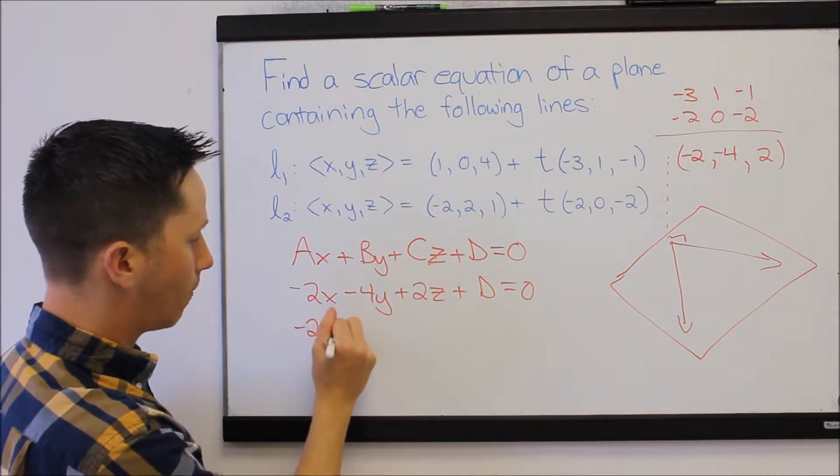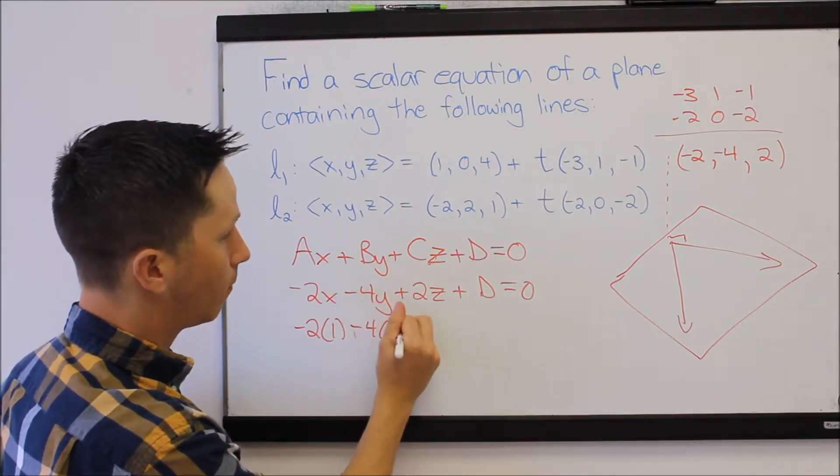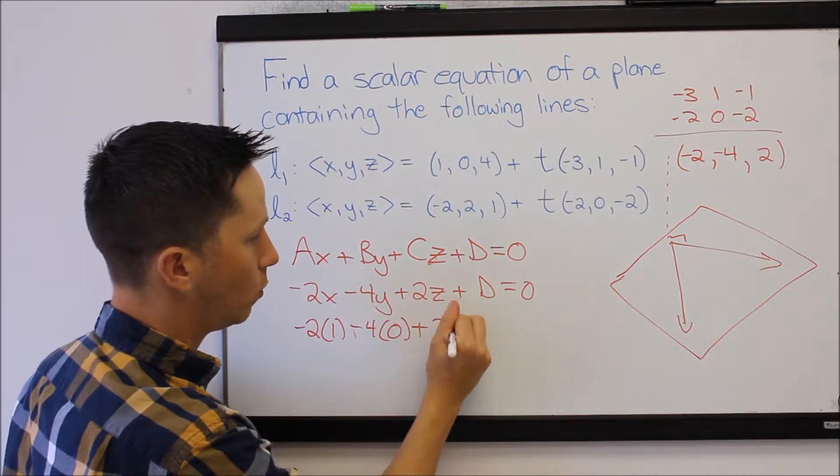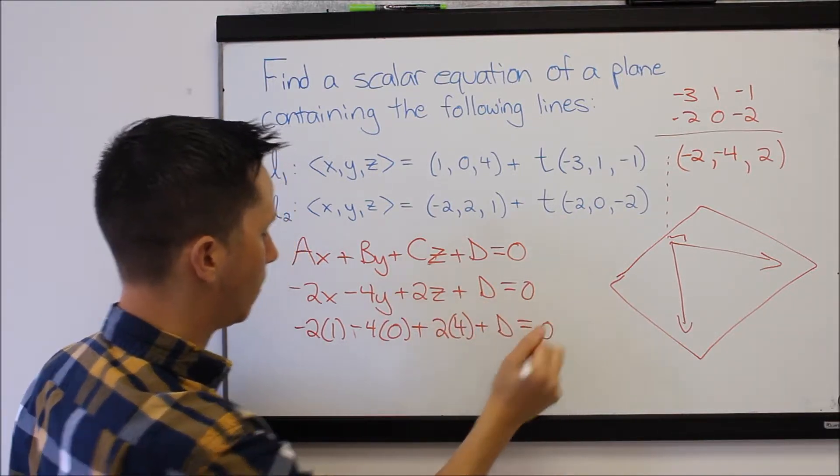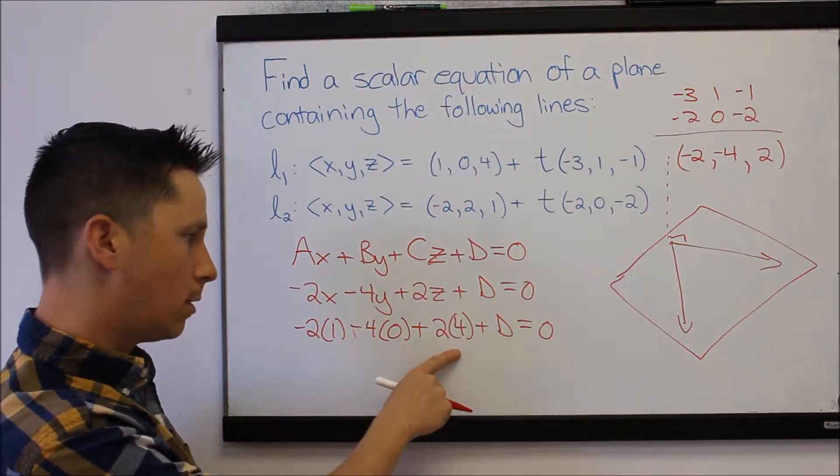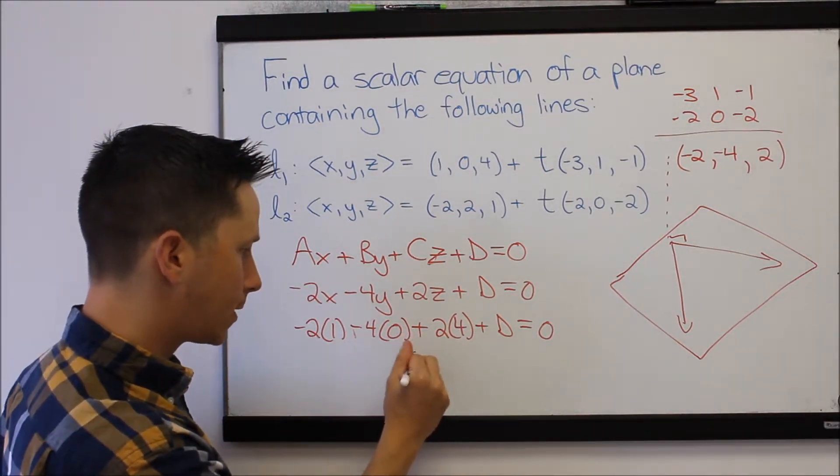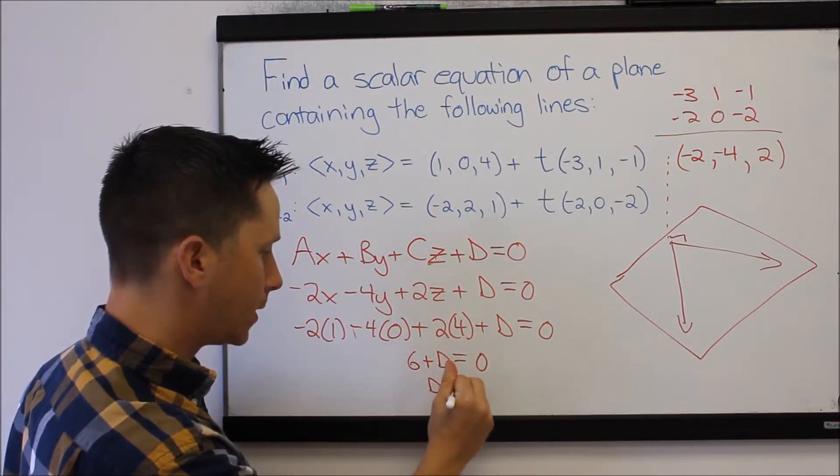So I'm going to plug in 1 for x minus 4, 0 for y, plus 2, 4 for z, plus D equals 0. What do we get? Minus 2 plus 0 plus 8 is 6 plus D equals 0. So D equals negative 6.